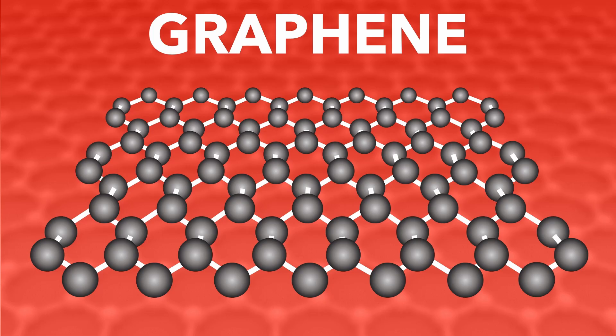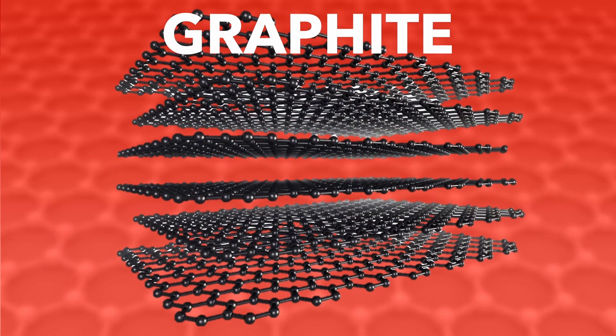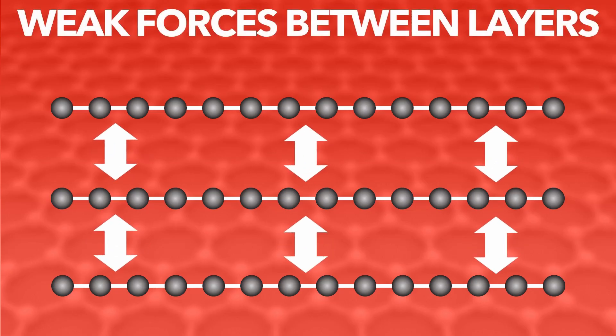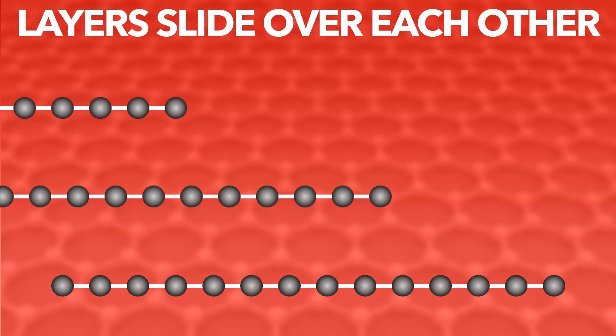If you sandwich layers of graphene together, you get graphite, used in pencil lead. Although the covalent bonds within each layer are strong, the intermolecular forces between layers are weak, meaning they can easily slide over each other. This makes graphite very soft.